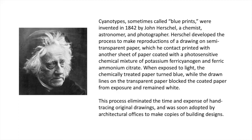Herschel developed the process to make reproductions of a drawing on semi-transparent paper, which he contact printed with another sheet of paper coated with a photosensitive chemical mixture of potassium ferricyanide and ferric ammonium citrate. When exposed to light, the chemically treated paper turned blue, while the drawn lines on the transparent paper blocked the coated paper from exposure and remained white.